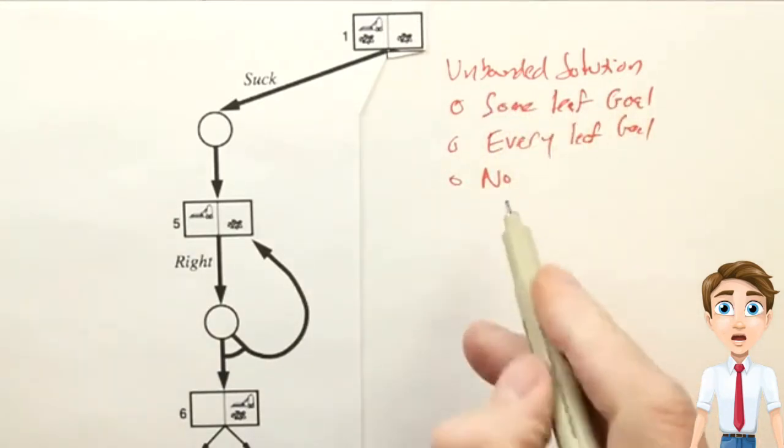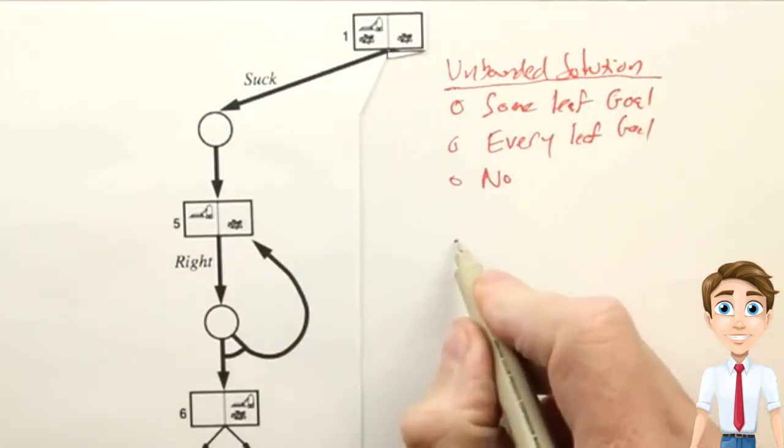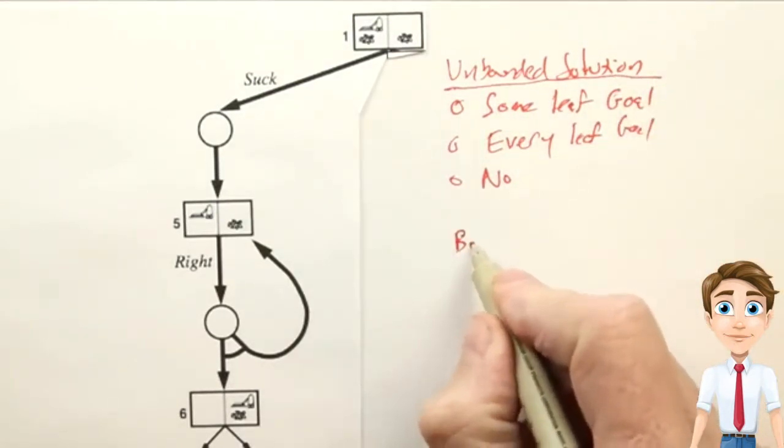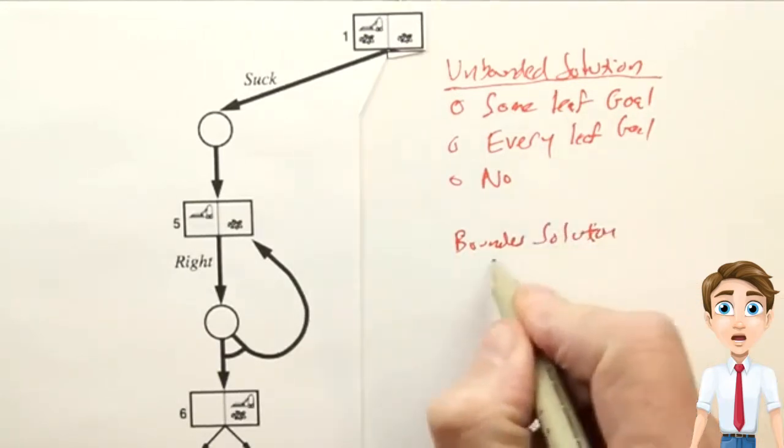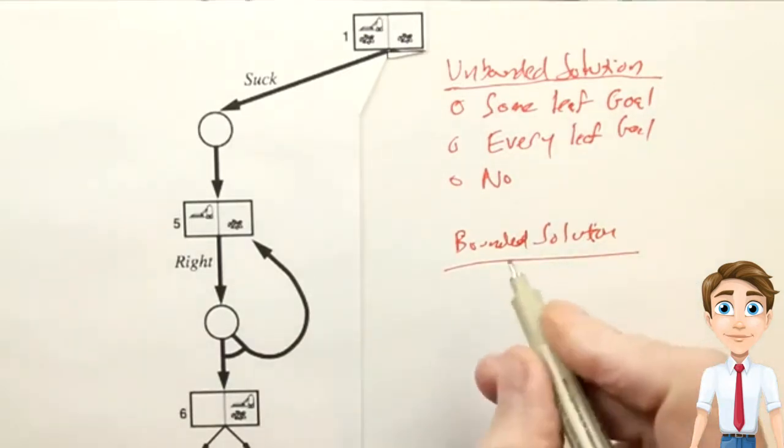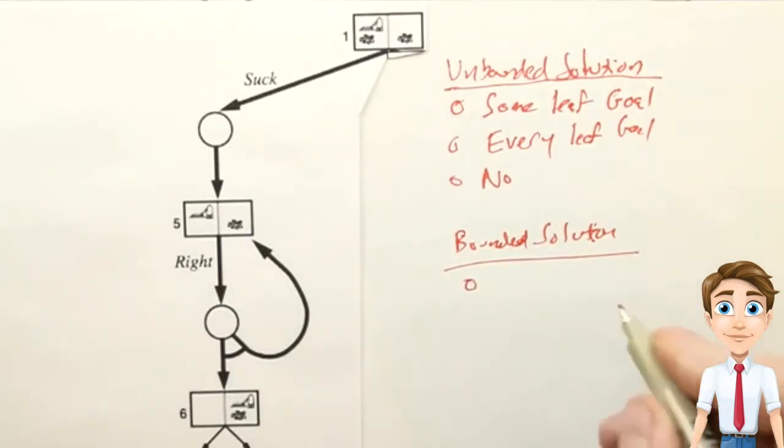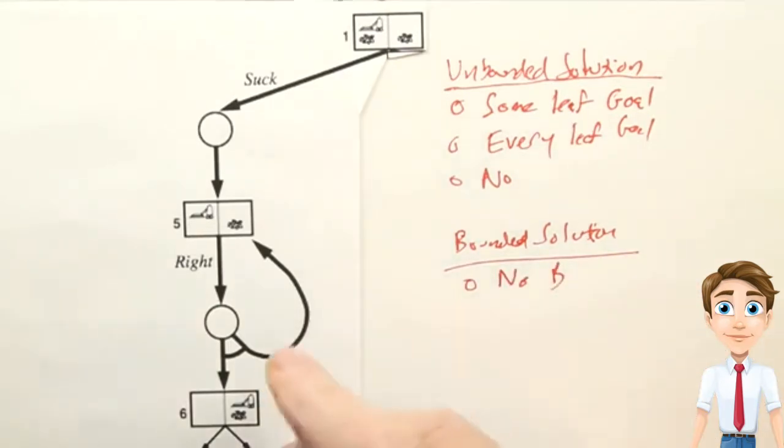Then I also want you to answer, what does it take to guarantee that we have a bounded solution, that is, a solution that is guaranteed to reach the goal in a bounded, finite number of steps? Do we need to have a plan that has no branches in it, like this branch?